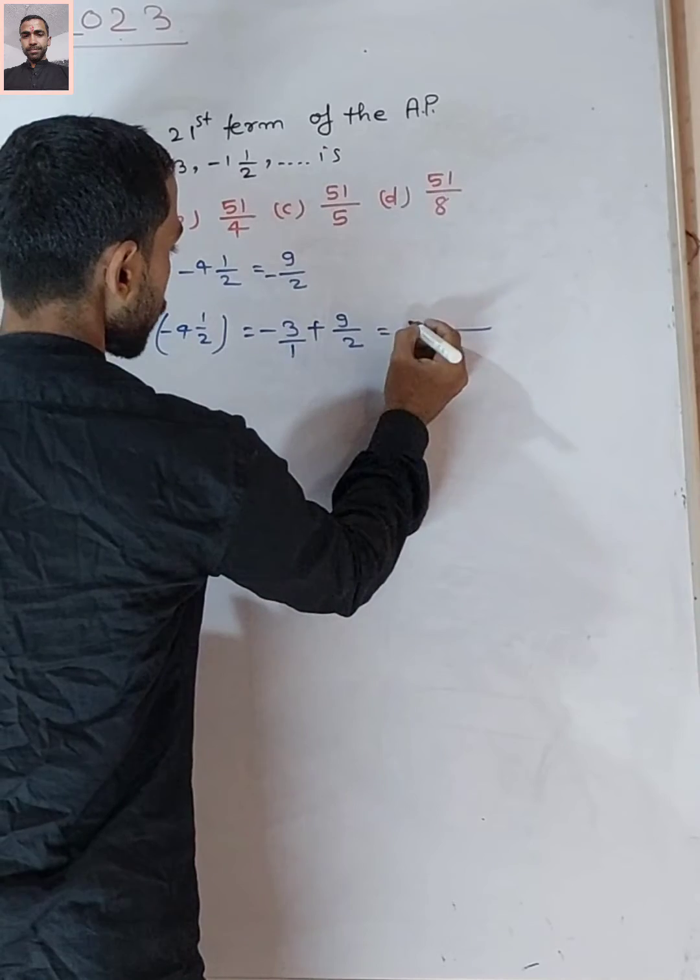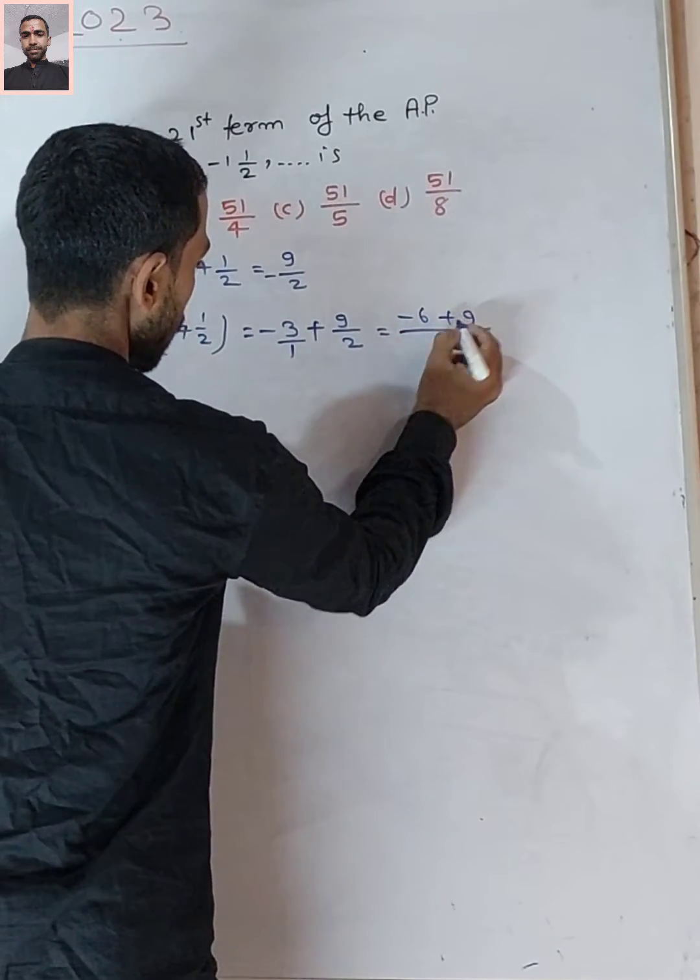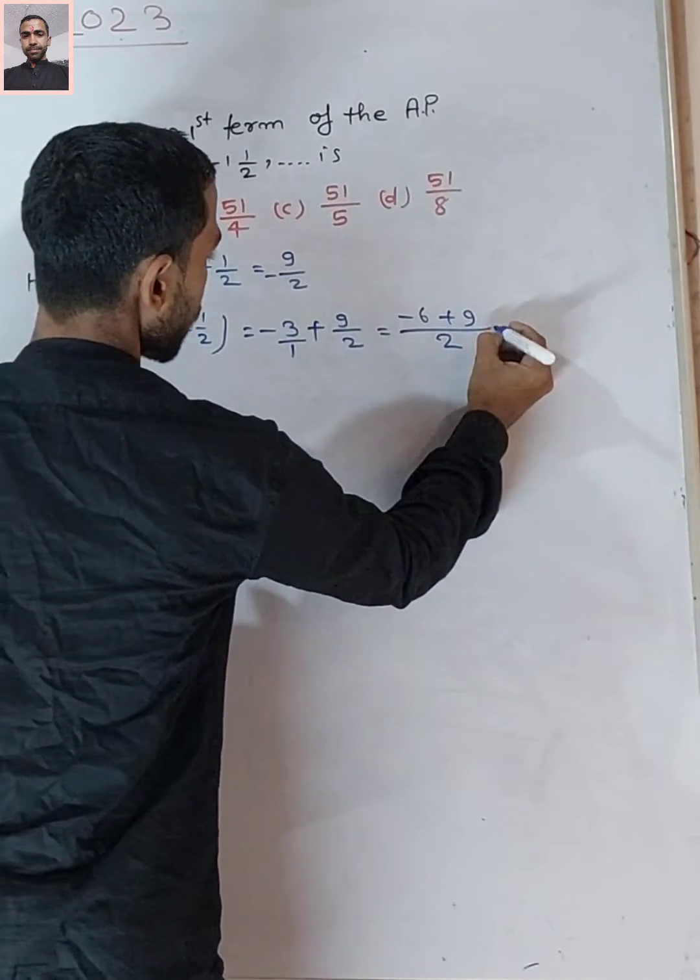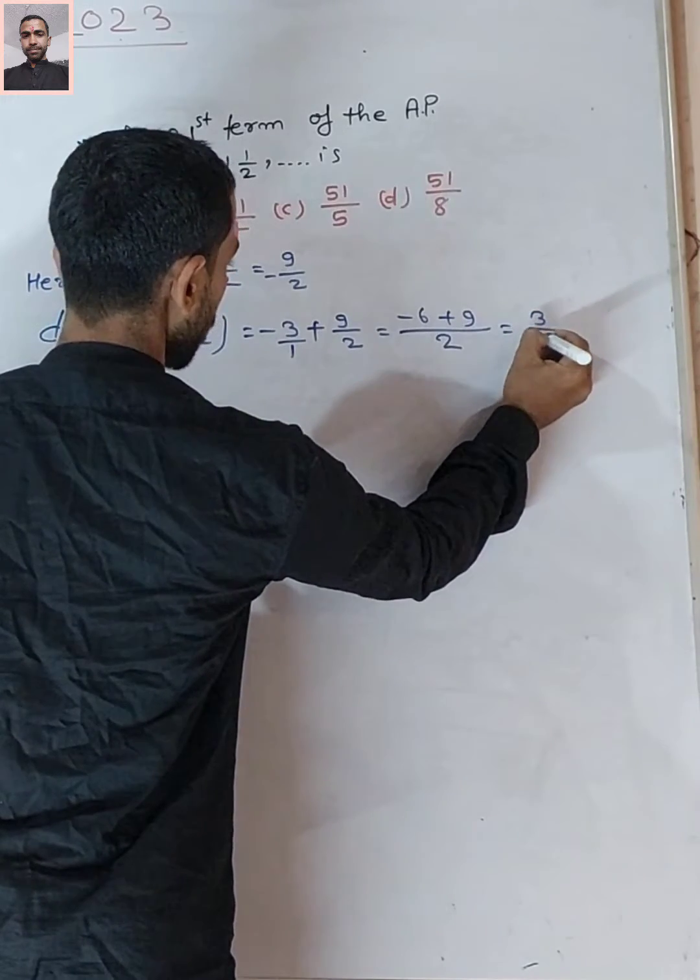So, -3 becomes -6, plus 9, which equals 3/2.